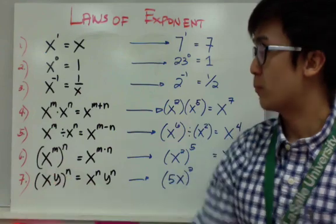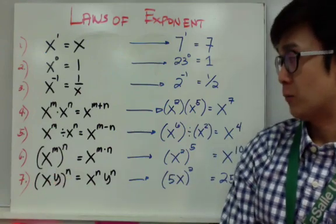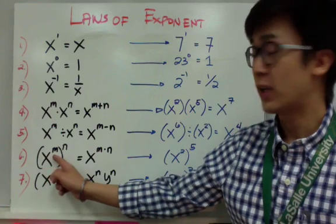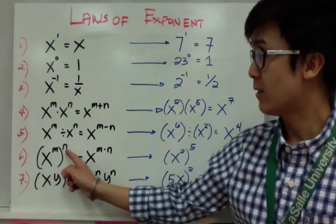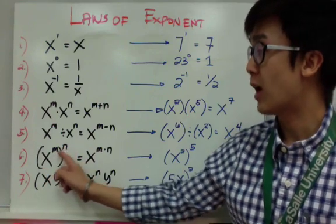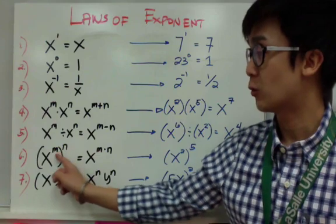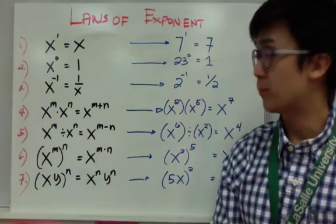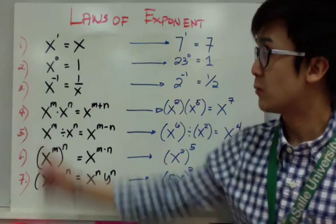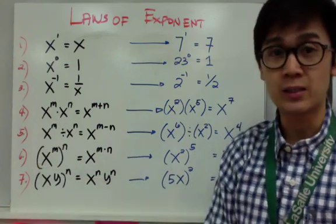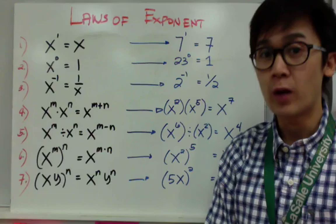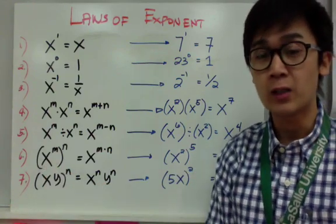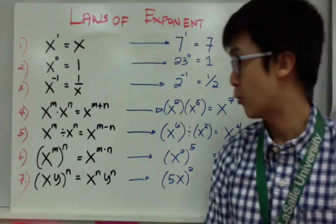Number 6 is power raised to a power. So if you have x raised to m, raised to n, all you have to do is multiply these two numbers — x to the m times n will be your simplest form. This is the difference between rule 4 and rule 6: when to add exponents and when to multiply exponents. In rule 6, we multiply because we have a power raised to a power.